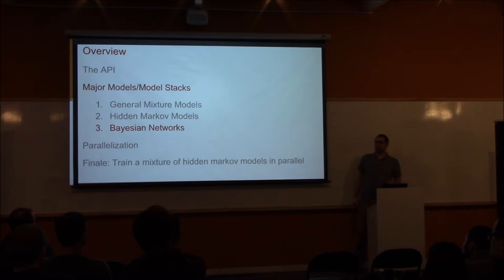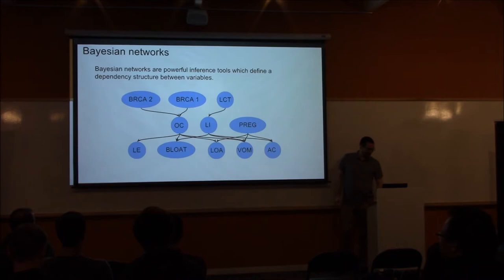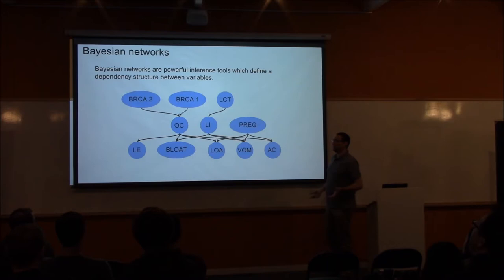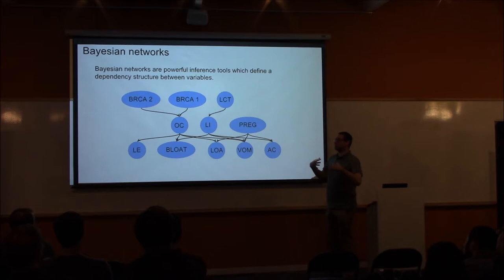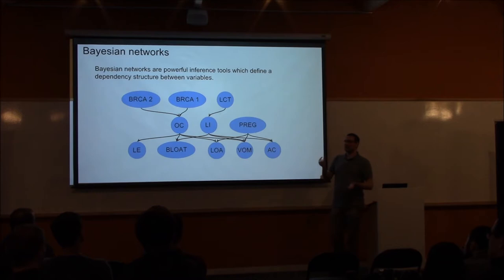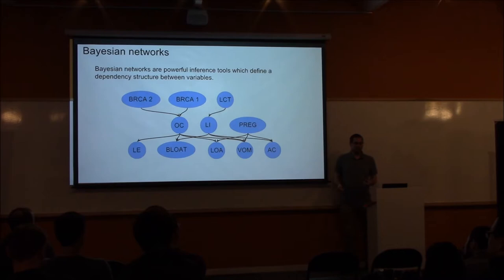Bayesian networks are a recent infatuation of mine — I really enjoy them even though I'm about two decades too late to be on the cutting edge. Basically, Bayesian networks define the dependency structures between variables: your variables are nodes, edges represent dependencies between variables, and a lack of an edge represents conditional independence — conditional independence, not independence, which is important. These allow inference to happen really easily because of the explicitly defined dependencies.